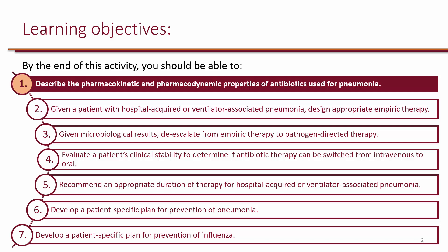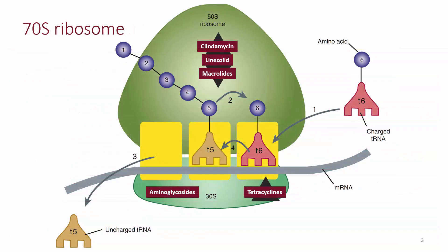Now let's describe the pharmacokinetic and pharmacodynamic properties of antibiotics used for pneumonia. In this picture we're looking at the bacterial 70S ribosome, which consists of the 50S subunit and the 30S subunit. These subunits come together around the mRNA in the bacteria, and tRNAs carry amino acids to the ribosome to start the translation process, which consists of initiation, elongation, and termination steps.